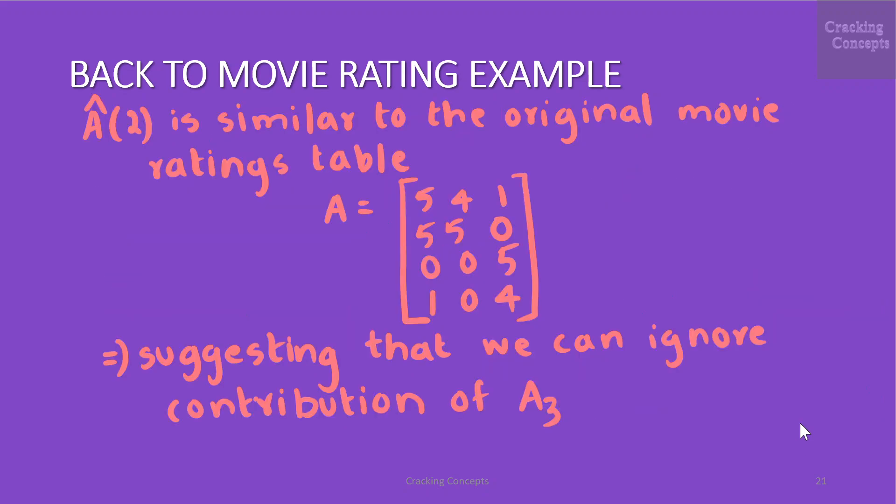This suggests that we can ignore the combination or the contribution of A_3. We can interpret this so that in the data table there is no evidence of a third movie theme or movie lovers category. This also means that the entire space of movie themes or movie lovers in our example is a two-dimensional space spanned by science fiction and French art house movies and lovers.